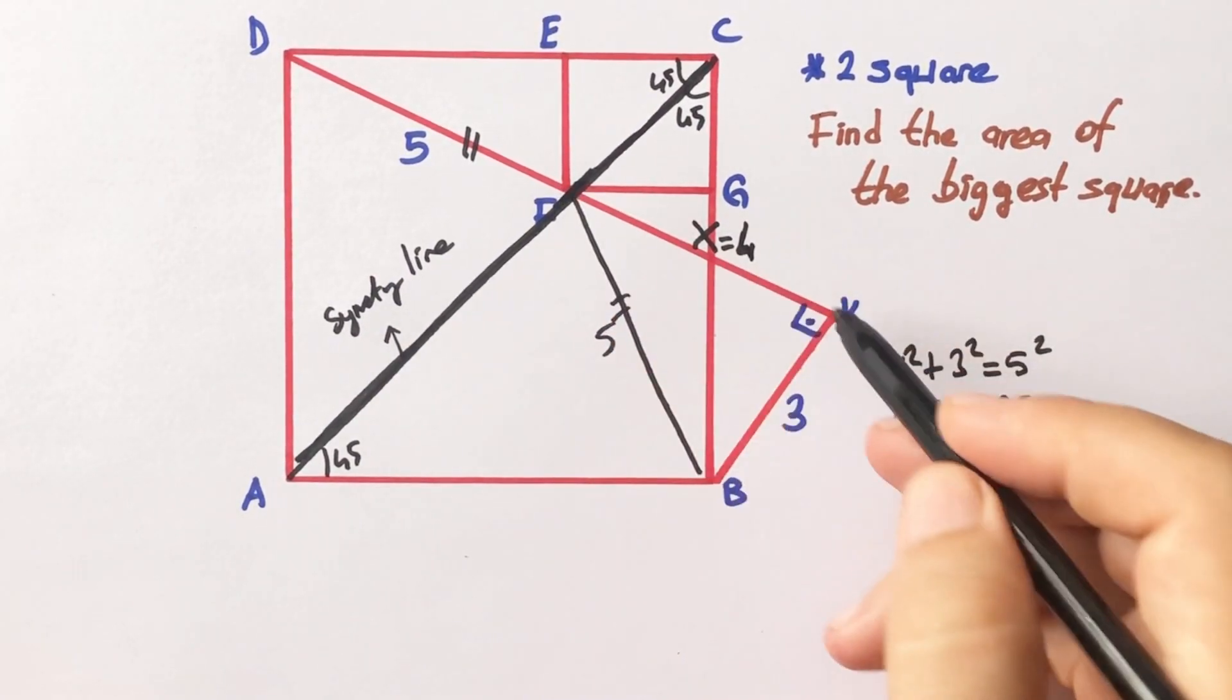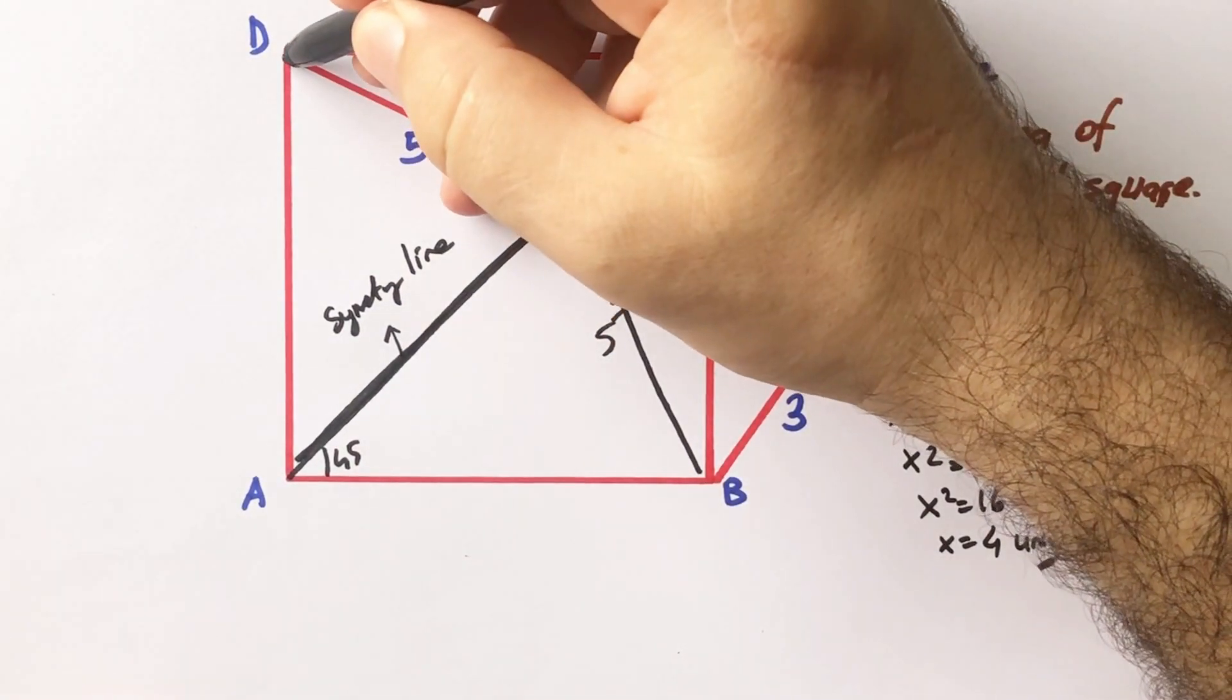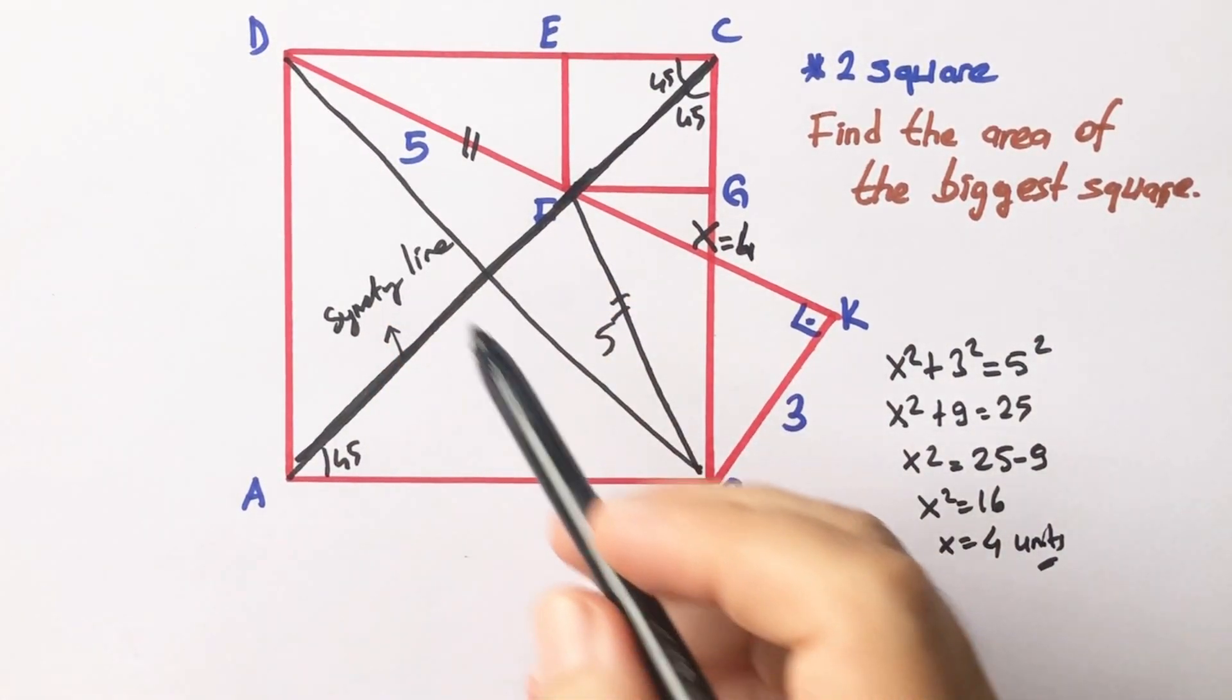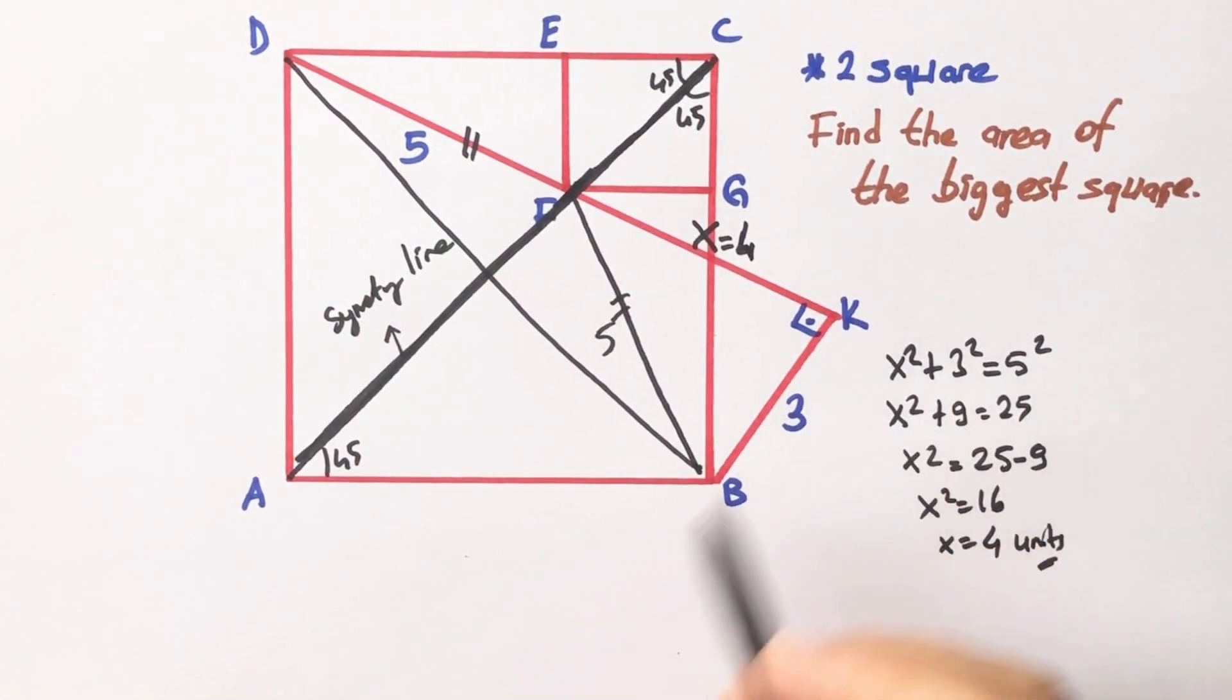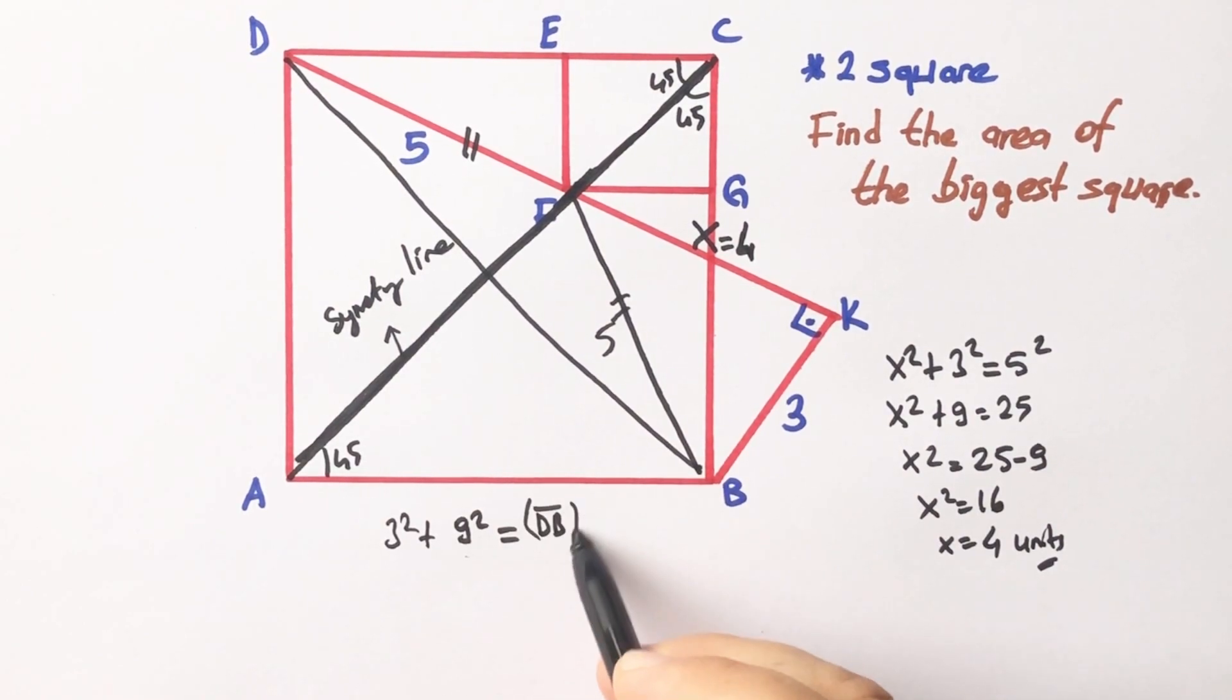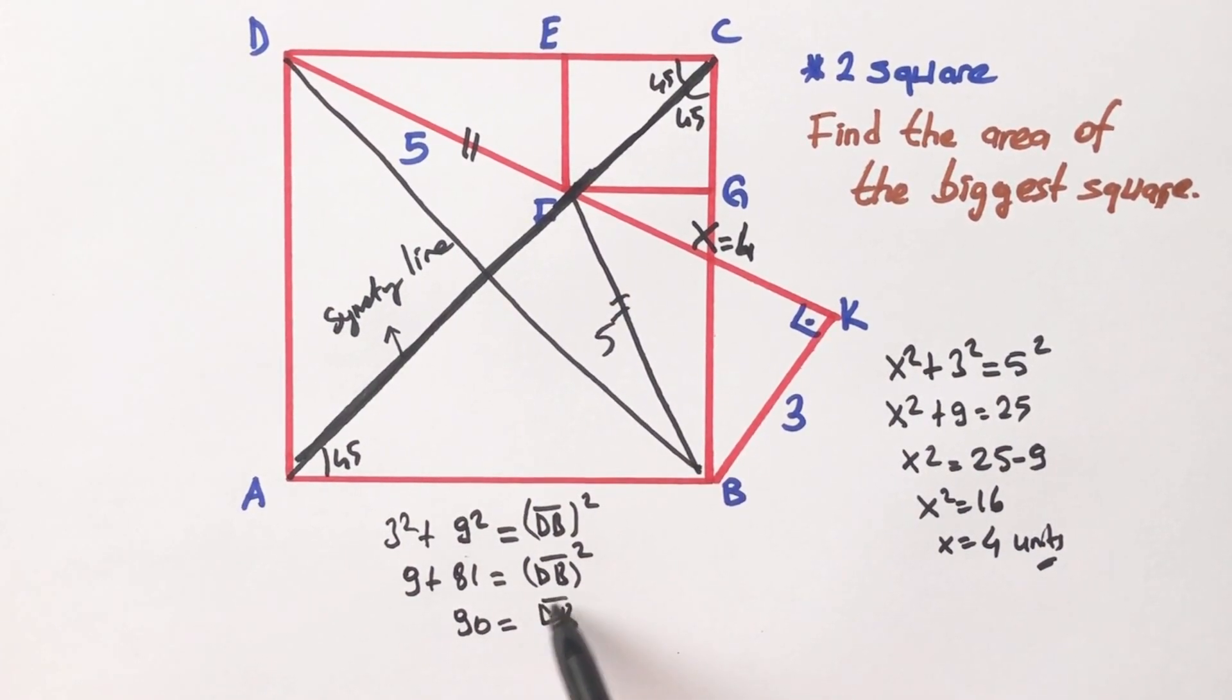Okay, and then let's draw the other diagonal. If you notice that we have a right triangle, so let's apply Pythagorean theorem again. 3 squared plus 9 squared equals DB squared. 9 plus 81 equals DB squared. 90 equals DB squared. Let's square root both sides.